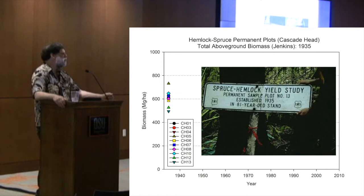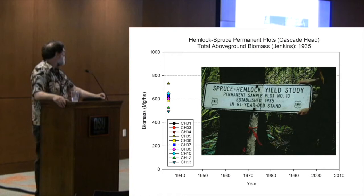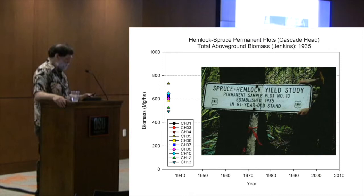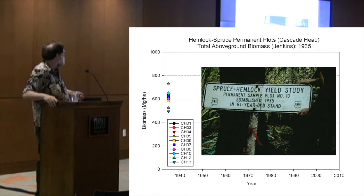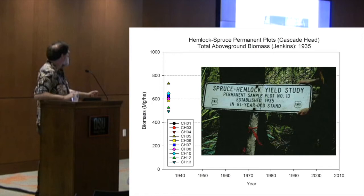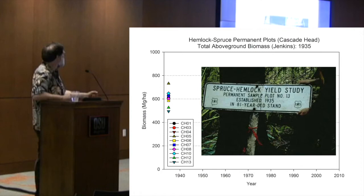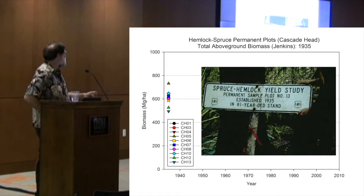The plots were started in 1935 in an 81-year-old stand. They're scattered throughout the Cascade Head Experimental Forest and all originated from the Nestucca fire, which is why we knew the age. I'm going to show you a series of graphs — time on the x-axis and biomass on the y-axis. These are based on the Jenkins equations, so think of them as relative biomass. You can see there's quite a spread — not quite a factor of two, but quite a range of starting biomasses.